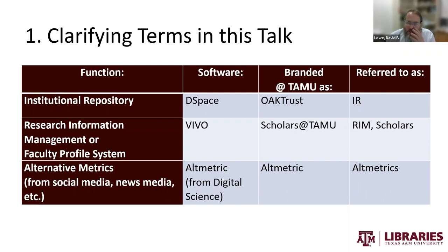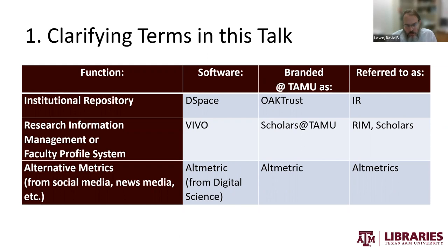We also use a RIM system — research information system — known as VIVO, referred to in the last talk as well, which we have branded as Scholars at TAMU. The third piece is the software for metrics from social and other media, dubbed alternative metrics or alt metrics for short. We use the product Altmetric — singular — from Digital Science, and we have not branded it differently.